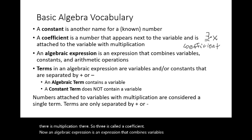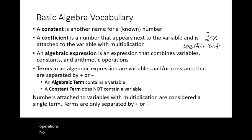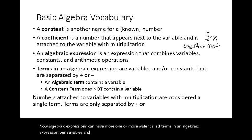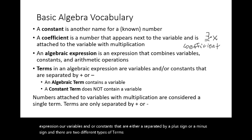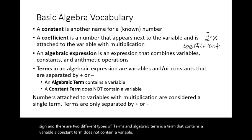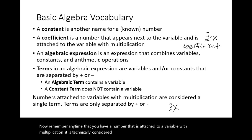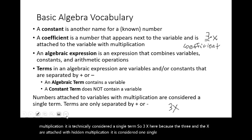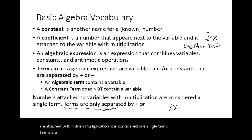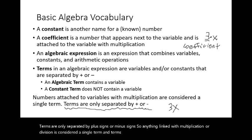An algebraic expression combines variables, constants, and arithmetic operations. Algebraic expressions can have one or more what are called terms. Terms in an algebraic expression are variables and/or constants that are separated by a plus sign or a minus sign. There are two types of terms: an algebraic term contains a variable, and a constant term does not contain a variable. Any time a number is attached to a variable with multiplication, it is considered a single term. Terms are only separated by plus signs or minus signs — anything linked with multiplication or division is considered a single term.